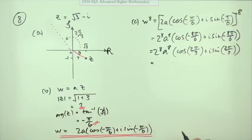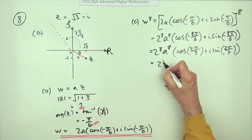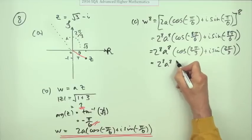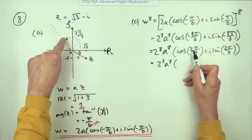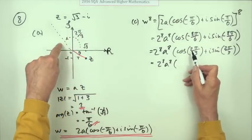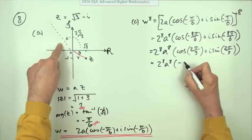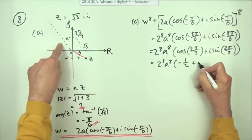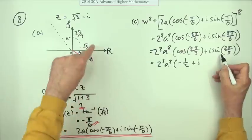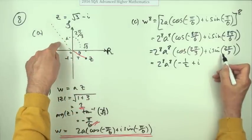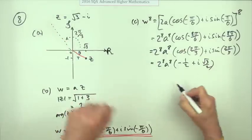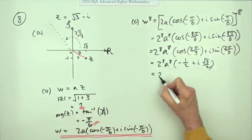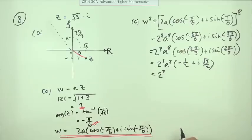Now it's just a case of putting that back to rectangular form by evaluating the two parts. So I've got 2 to the power of 8, a to the power of 8. Now the cosine, I'm just going to change it into real money, of 120 is the same as the cosine of 60 but negative. And the cosine of 60 is a half plus i times. The sine of 120 is the same as the sine of 60 but positive. And the sine of 60 is root 3 upon 2.